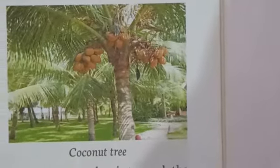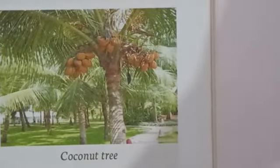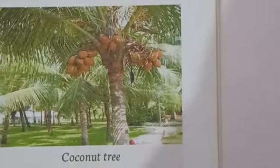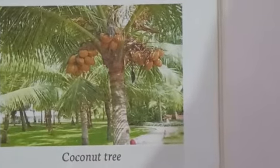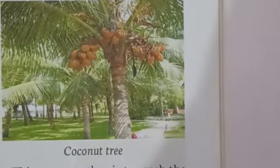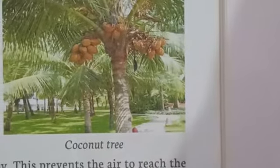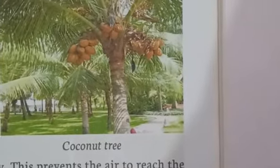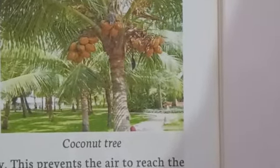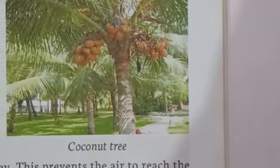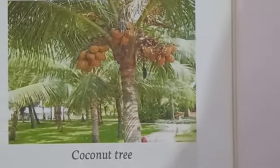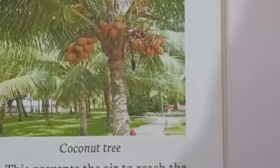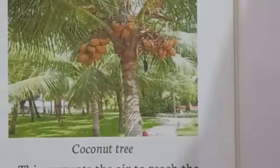The weather in coastal areas is hot, wet and windy. The soil is sandy and the water is salty. Trees growing in coastal areas are tall and straight. They have a crown of giant feather-like leaves, which allows the wind to pass through the trees. Being close to the sea, their fruits and seeds are carried to far-off places by sea water, helping them to grow in distant locations. Coconut trees grow in coastal areas.